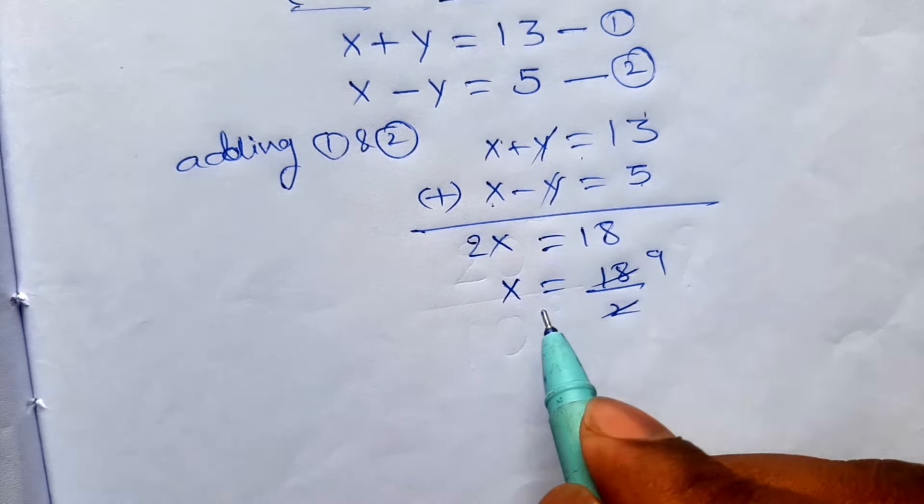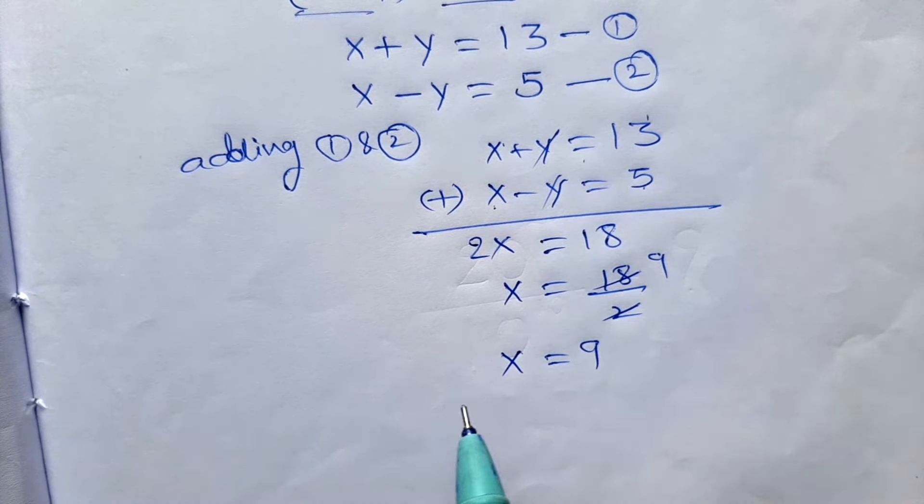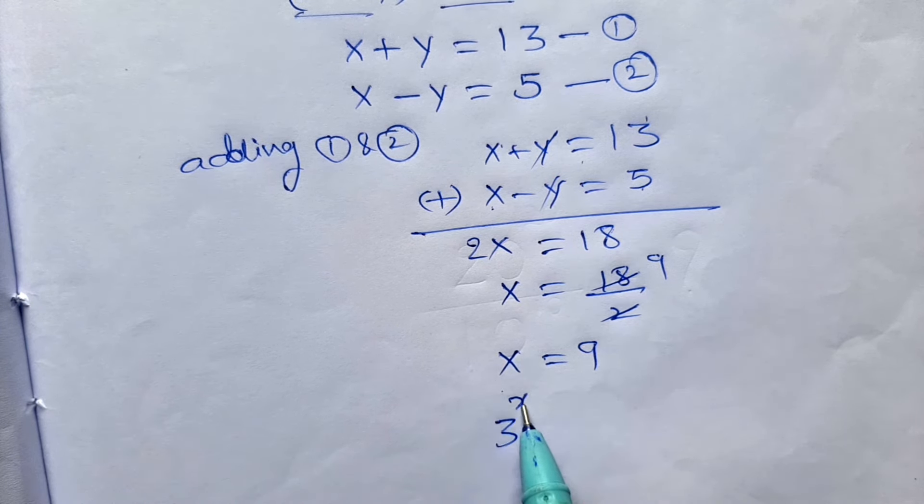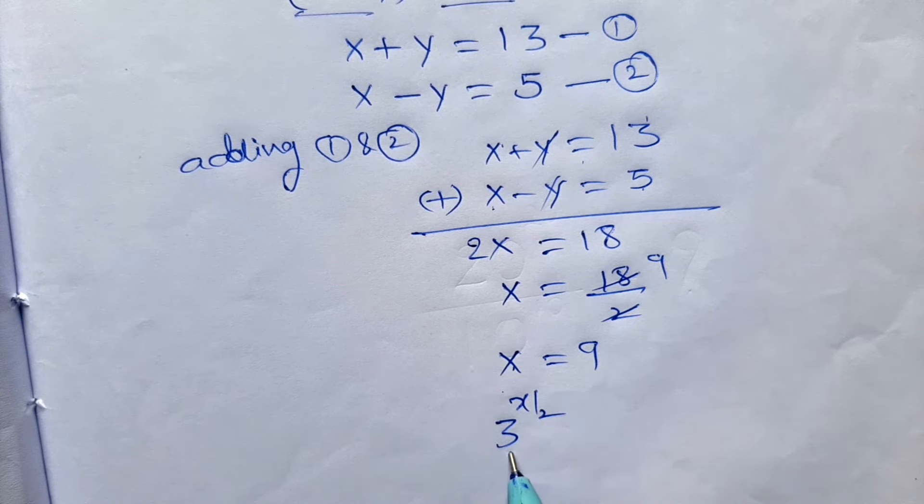In x place what we have to take? In 3 to the power x by 2, 3 to the power x by 2, x place take 3 to the power x by 2 is equal to 9.